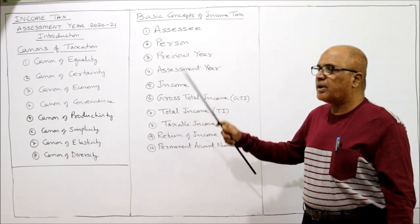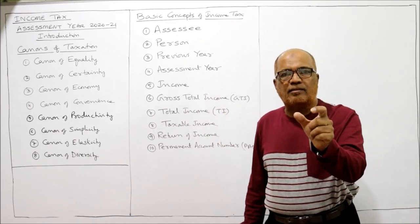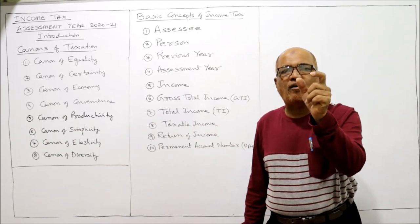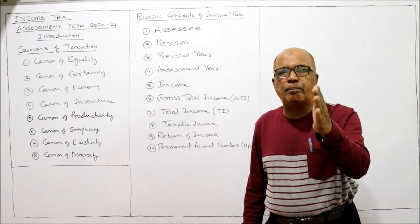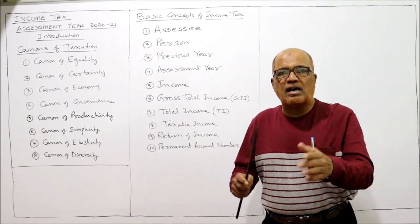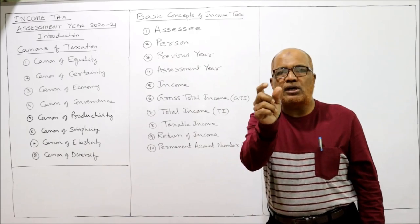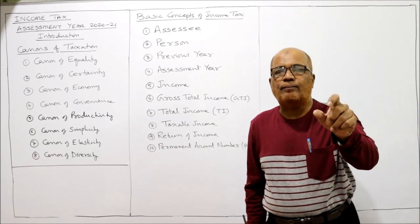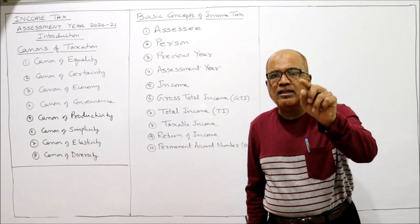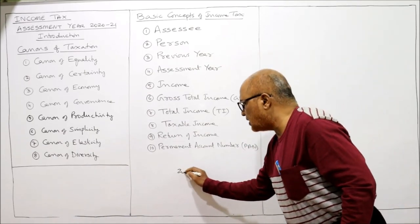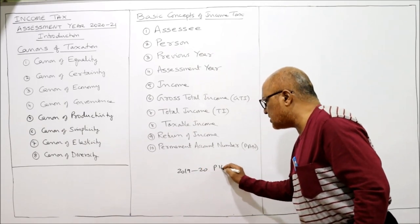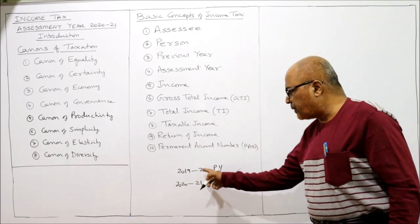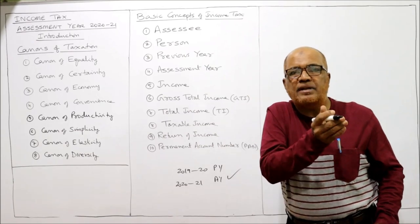Previous year means a period of 12 months immediately preceding the assessment year. For example, if the current assessment year is 2020-2021, then immediately before that — 2019-2020 — is the previous year. The 12-month period immediately preceding the assessment year is the previous year.